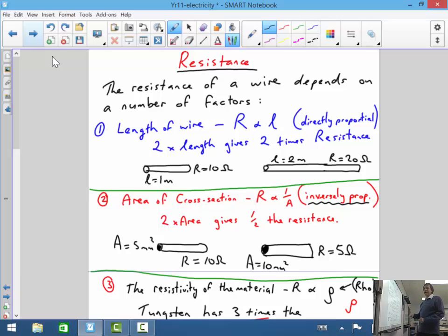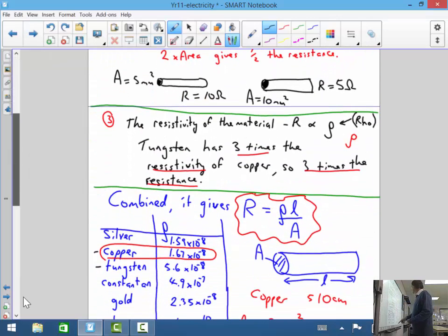...we'd expect the resistance to go down because the current's going to go up. So 10 times area of cross-section, you'll get one-tenth of the resistance. And the resistivity is a measure that sort of tells you the difference between the different materials. If you combine all those ideas about two proportionalities and one inverse one, you end up with this formula here for resistance to work out the resistance of any piece of material.